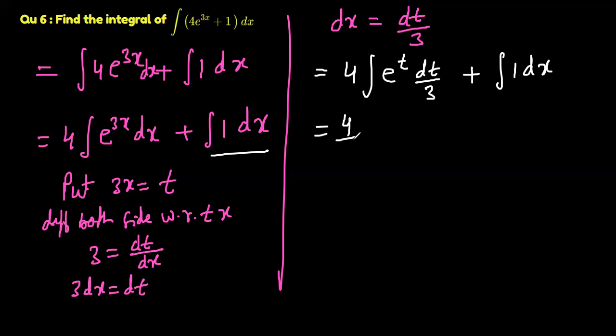This 4 by 3 is out because this is constant taken out, and integration of e to power t dt plus integration 1 dx. E to power t integration is e to power t only, so 4 by 3 as it is.